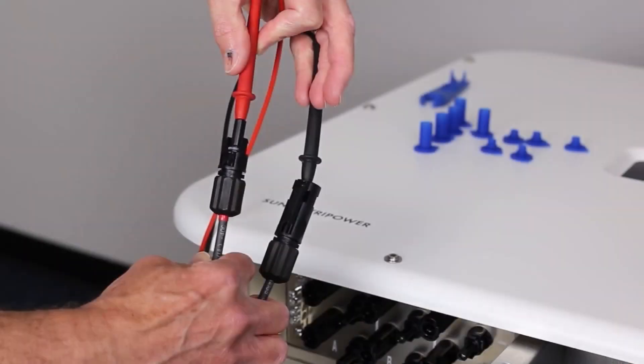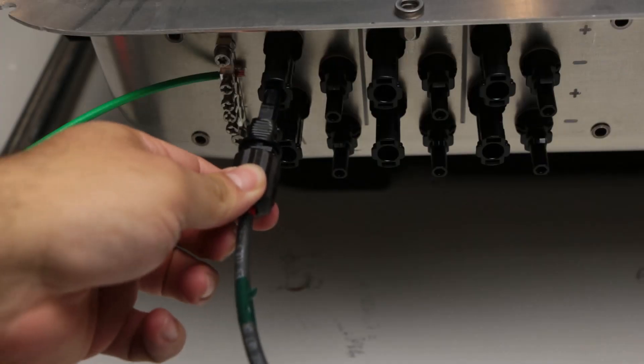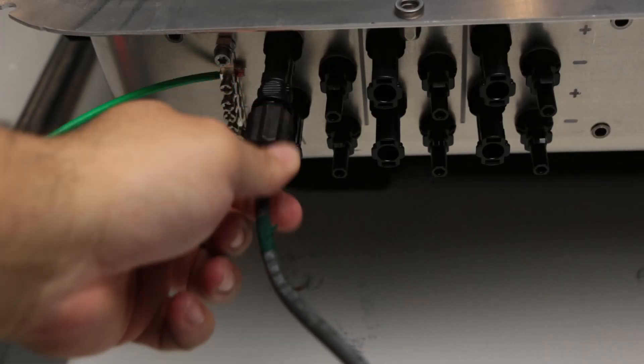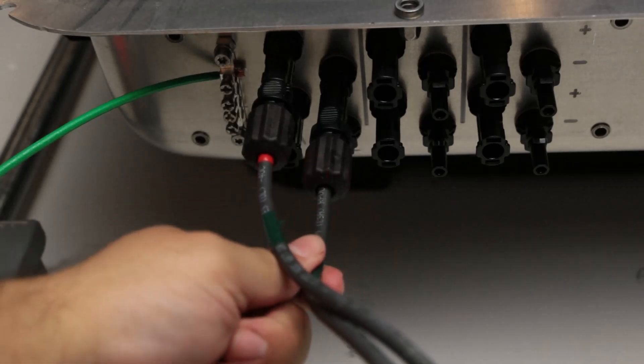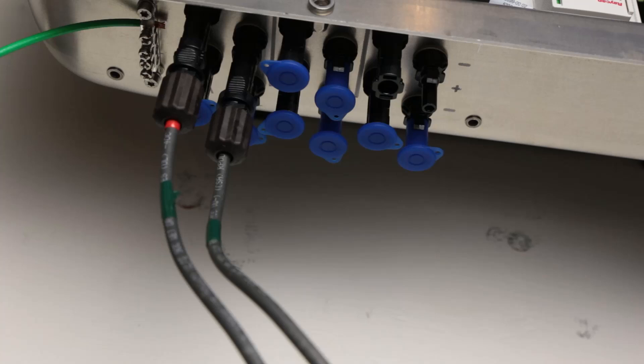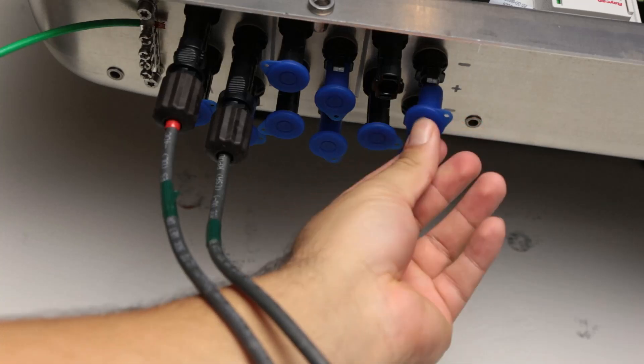Before connecting the home run cables, check the polarity of each cable. Connect your home run cables to the inverter bulkhead terminals, and then cover all unused bulkhead connectors with the provided sealing caps.